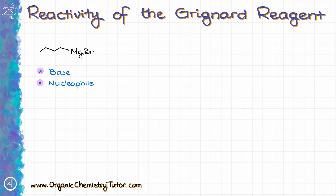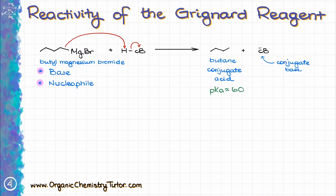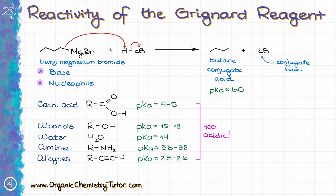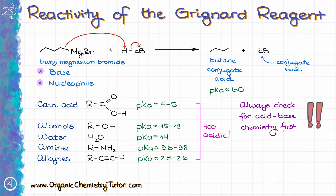Let's look at the acid-base properties of the Grignard reagent. In a reaction between butylmagnesium bromide and a hypothetical acid, the pKa value of our conjugate acid is going to be somewhere in the vicinity of 60. This means that anything with a pKa lower than that will be acidic enough to easily react with our Grignard reagent. If we look at all common acidic species in organic chemistry — such as carboxylic acids, alcohols, water, amines, or even terminal alkynes — they are all way too acidic to peacefully coexist with the Grignard reagent. Proton transfer reactions have an extremely low activation barrier, so they will typically happen before anything else.